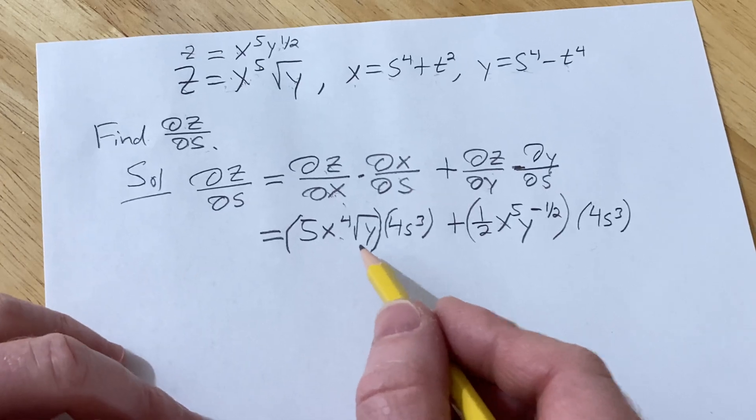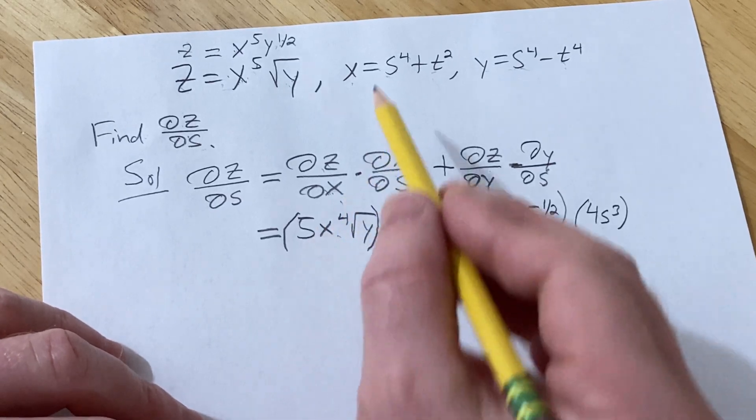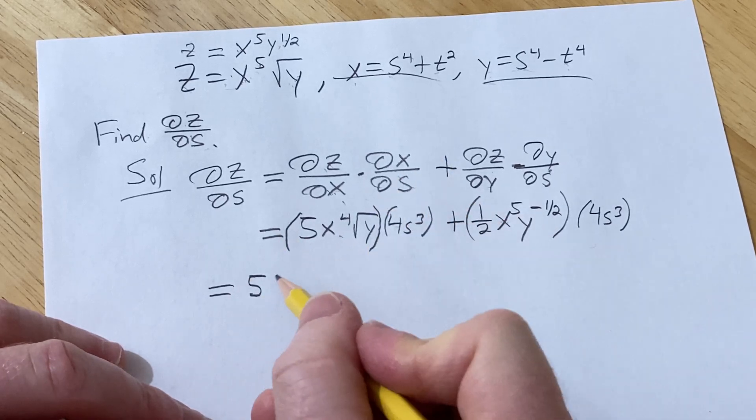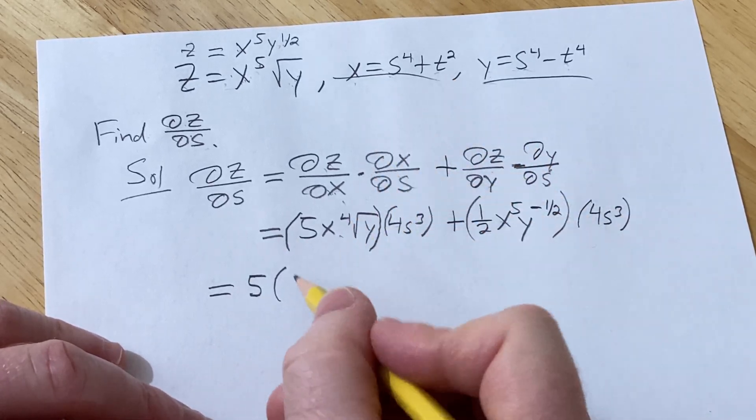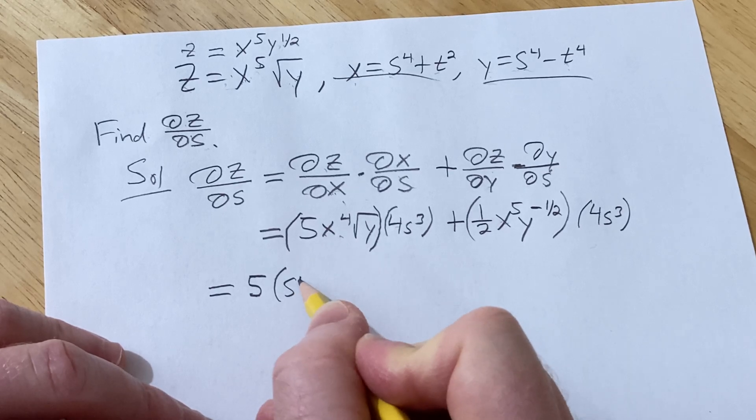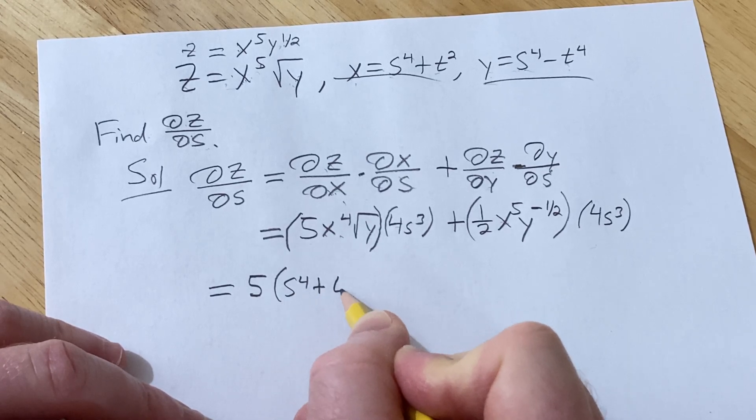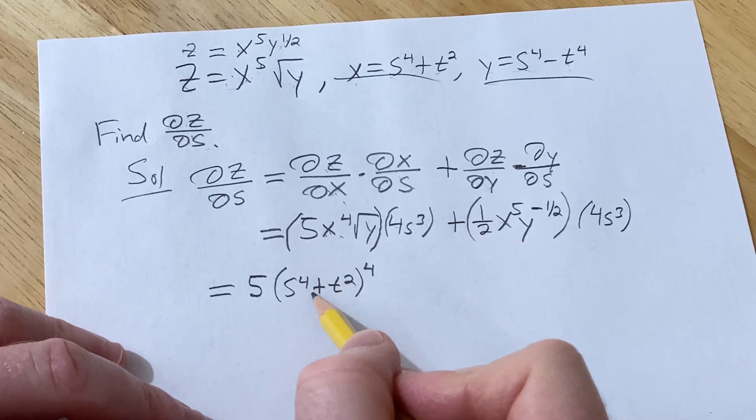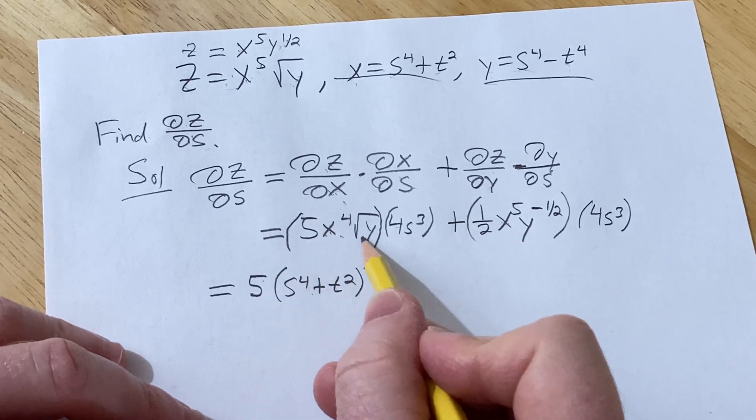So now what we're going to do is we're going to carefully plug in x and y. Be really careful, it's really easy to mess up. So this is 5, x is going to be s to the fourth plus t squared, so instead of x we have s to the fourth plus t squared to the fourth. Okay so that's our x and there's our five, and then square root of y.